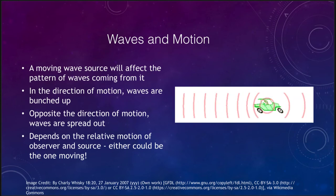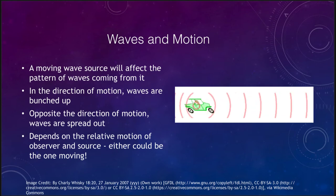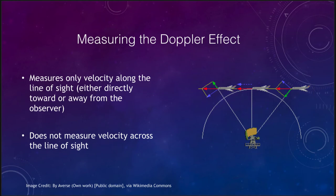So how do we go about measuring something like the Doppler effect? In order to measure it, we have to note that it only measures a part of the velocity — what we call the velocity along the line of sight. That is the part of the velocity that is either directly toward or directly away from the observer.